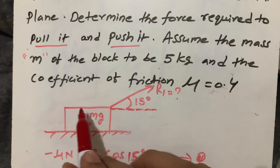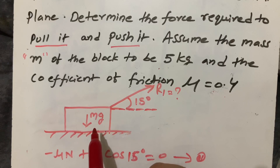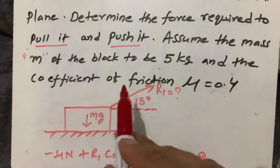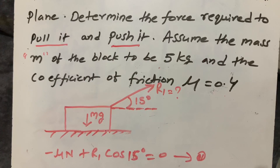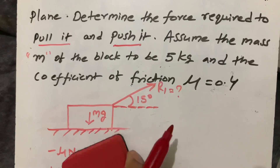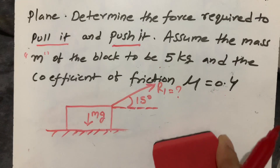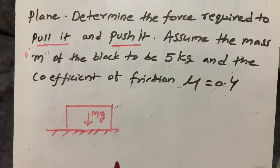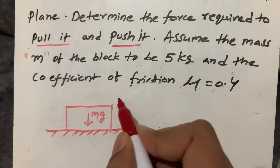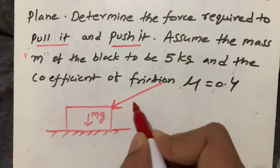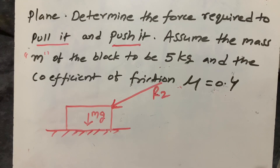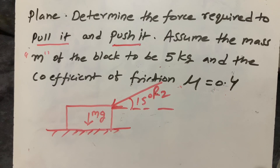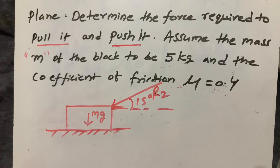That is the R1 value to pull the wooden block from rest. The second condition is the pushing force. The same block with the same θ = 15 degrees, but now the applied force R2 is the pushing force.